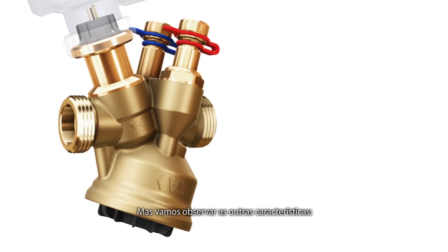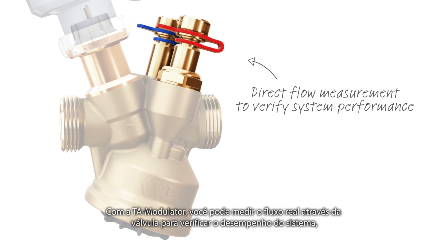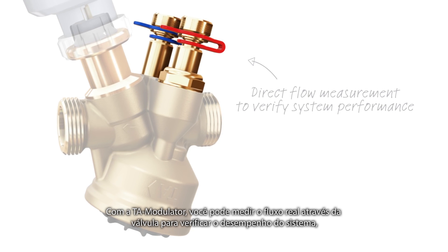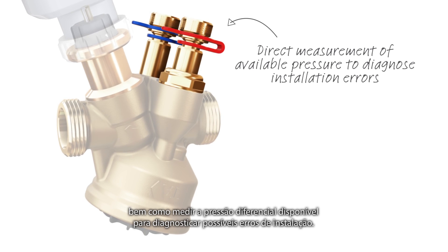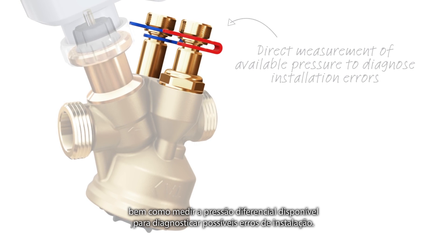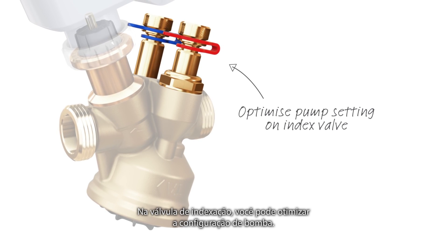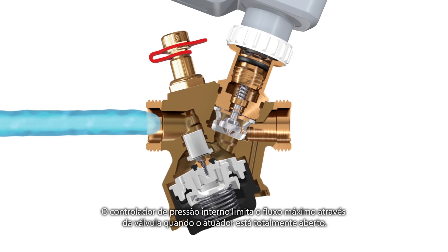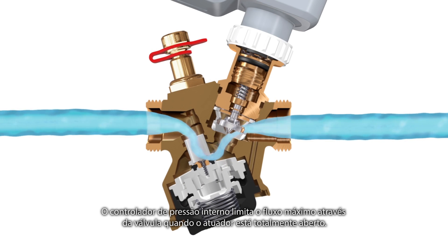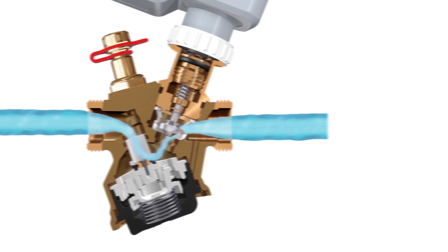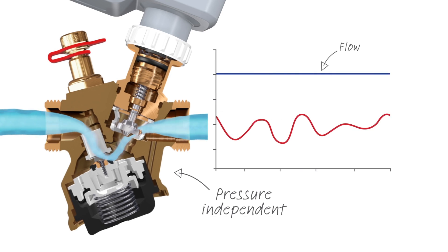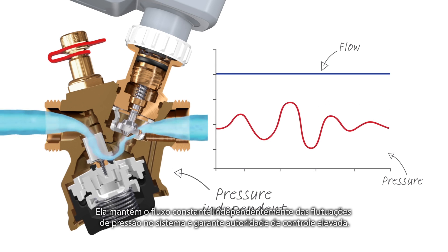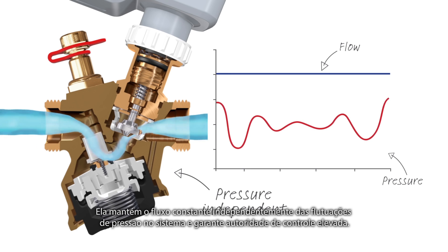But let's look at the other unique features. With TA modulator you can measure the true flow through the valve to verify the system performance, as well as measure the available differential pressure to diagnose possible installation errors. On the index valve you can optimize pump setting. The built-in pressure controller limits the maximal flow through the valve when the actuator is fully open. TA modulator is a pressure independent valve — it keeps the flow constant regardless of pressure fluctuations in the system and guarantees high control authority.